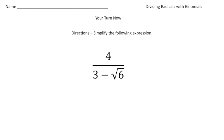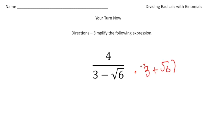Welcome back. Let's see how you do on this practice problem. Here we have the expression 4 divided by 3 minus the radical 6. So we need to multiply both the numerator and denominator by the conjugate, which is going to be 3 plus the square root of 6. And remember, what you do to the numerator, you have to do the same thing to the denominator — so 3 plus the square root of 6.